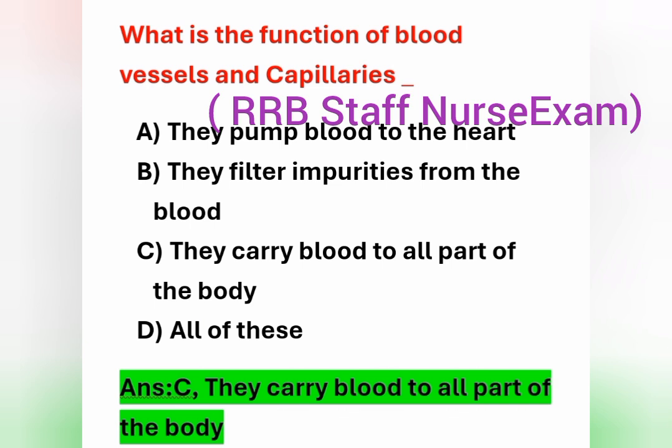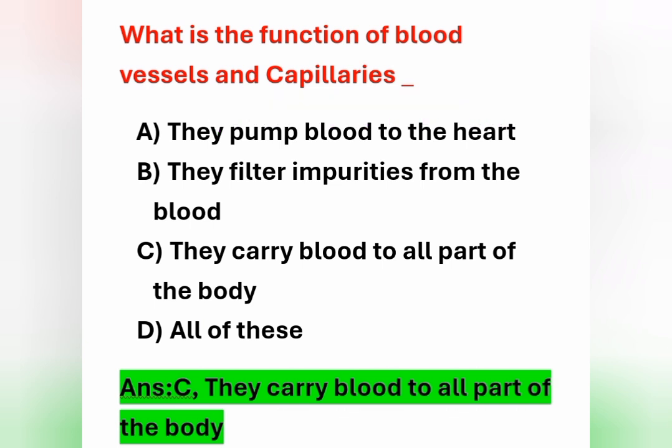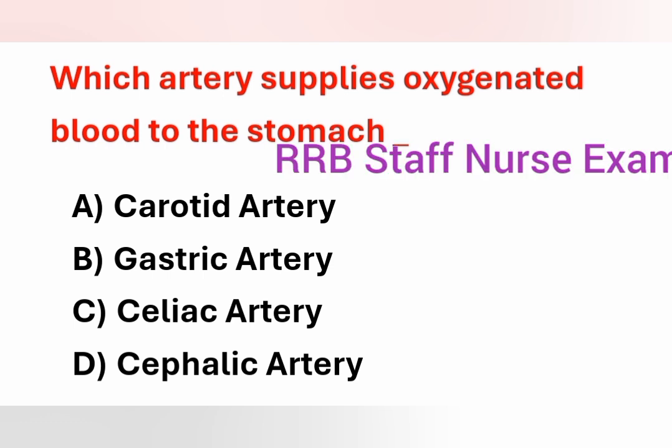Option A – pumping blood to the heart – is not the function of blood vessels and capillaries; mainly coronary arteries supply blood to the heart. Option B – filtering impurities from the blood – is also not their function; impure blood goes to the lungs where it is purified. So the correct answer is that blood vessels and capillaries carry blood to all parts of the body.